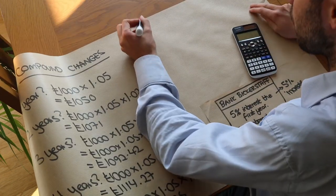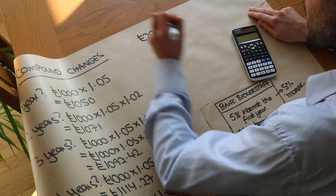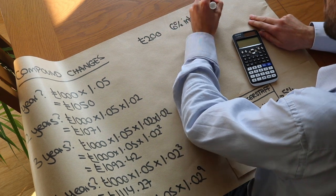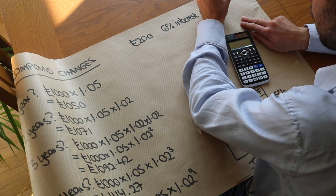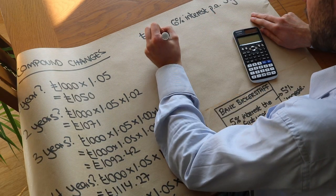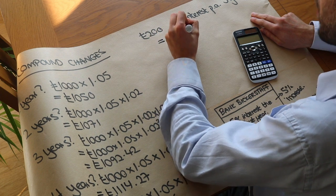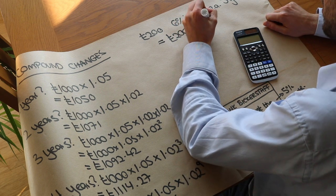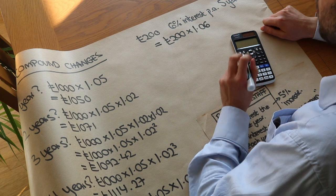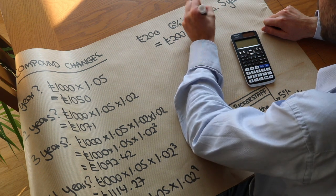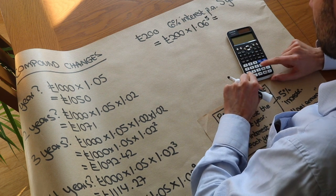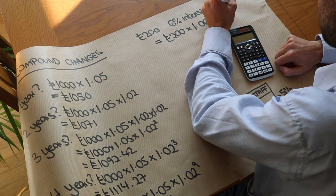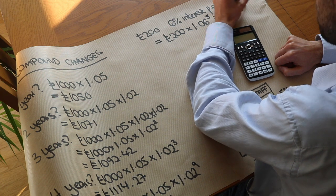Here's one more example. We have two hundred pounds and get 6% interest per annum. How much do we have after five years? We start with 200 and multiply by 1.06 — the decimal multiplier for a 6% increase — and we're applying that change five times, so we raise it to the power of five. Two hundred times 1.06 to the power of five gives two hundred and sixty-seven pounds and sixty-five pence.